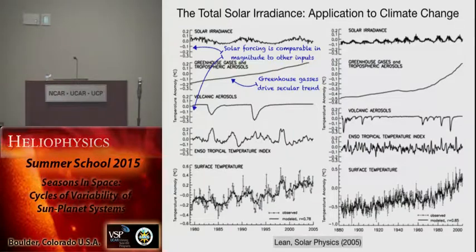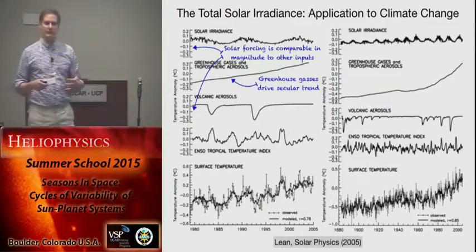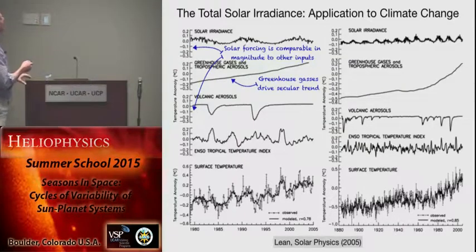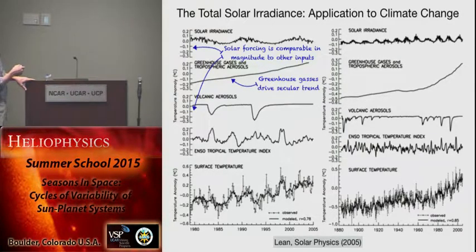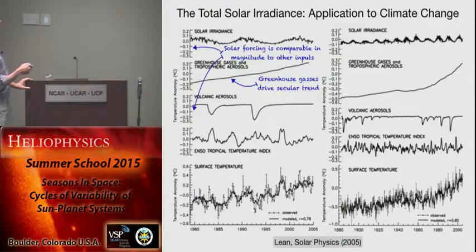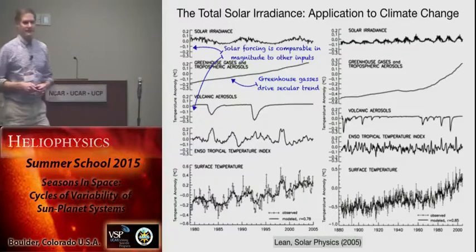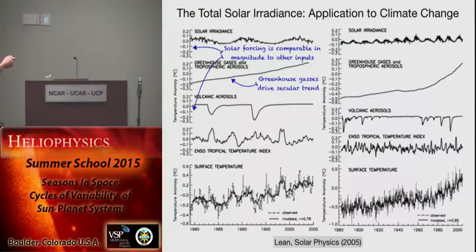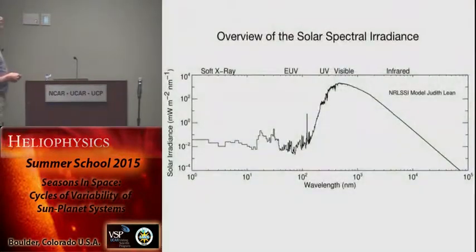The importance is that you can quantify the contribution of irradiance variability to surface temperature anomalies. The solar irradiance over a solar cycle does make a significant contribution — it's like 0.1 degrees, comparable to some other contributors. But you can also see that if you put the solar contribution to zero, it's not going to overwhelm the secular rise in greenhouse gases. Similarly, just by adjusting the magnitude of solar irradiance, you wouldn't be able to create the secular rise in surface temperature.